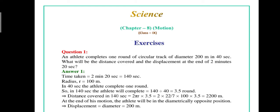Now our first question is: an athlete completes one round of a circular track of diameter 200 meters in 40 seconds. What will be the distance covered and the displacement at the end of 2 minutes 20 seconds?